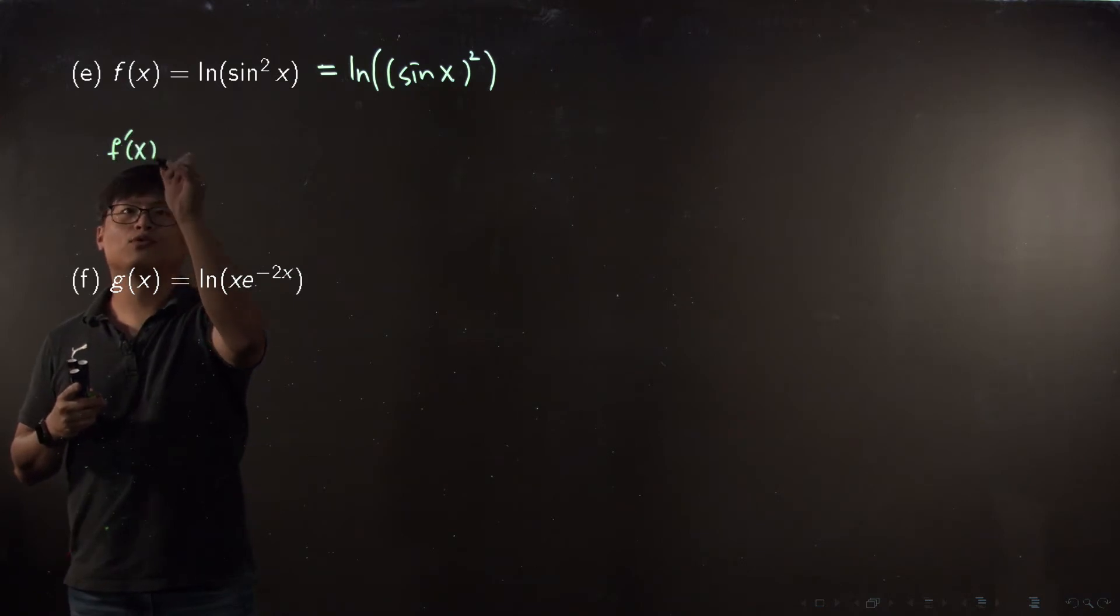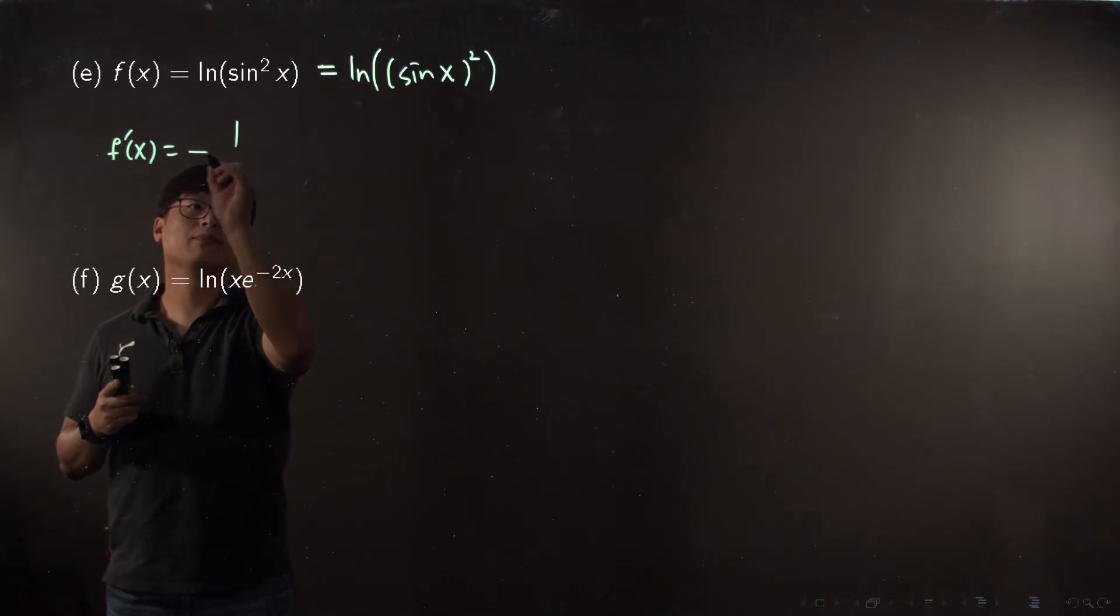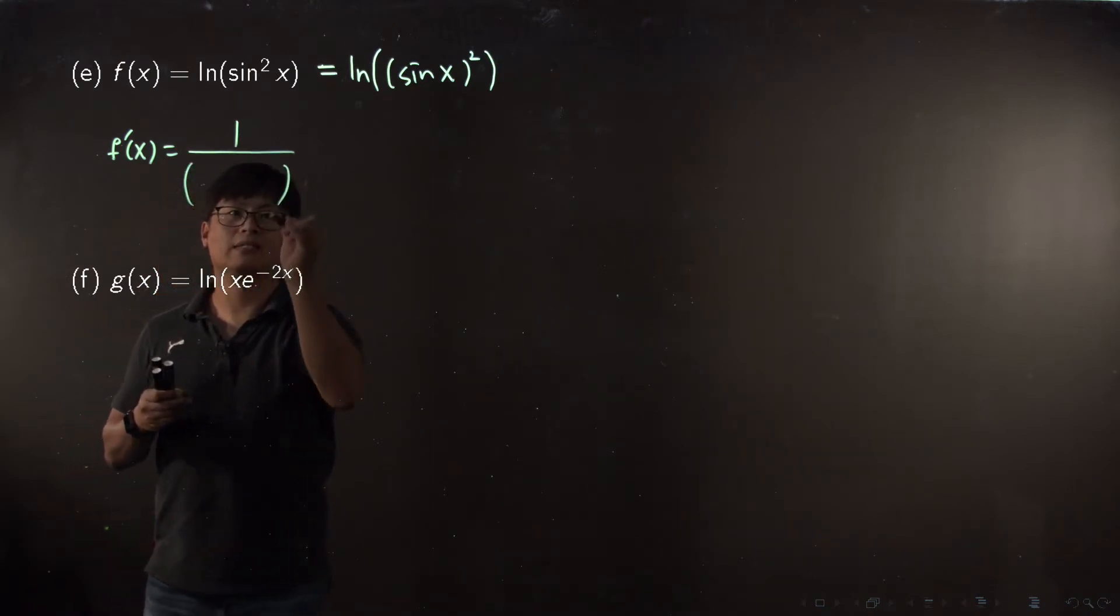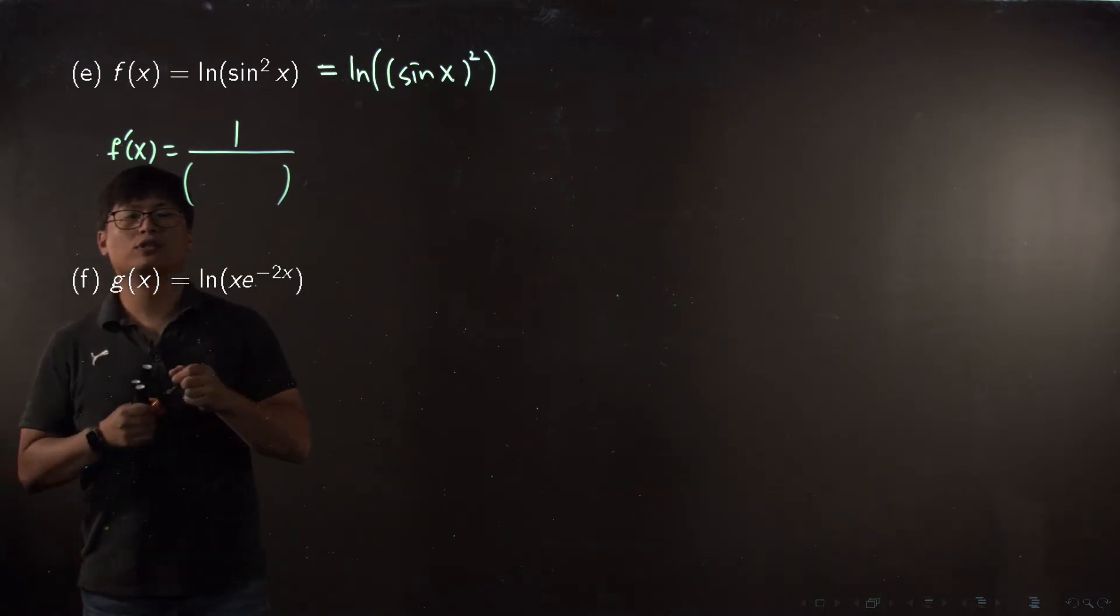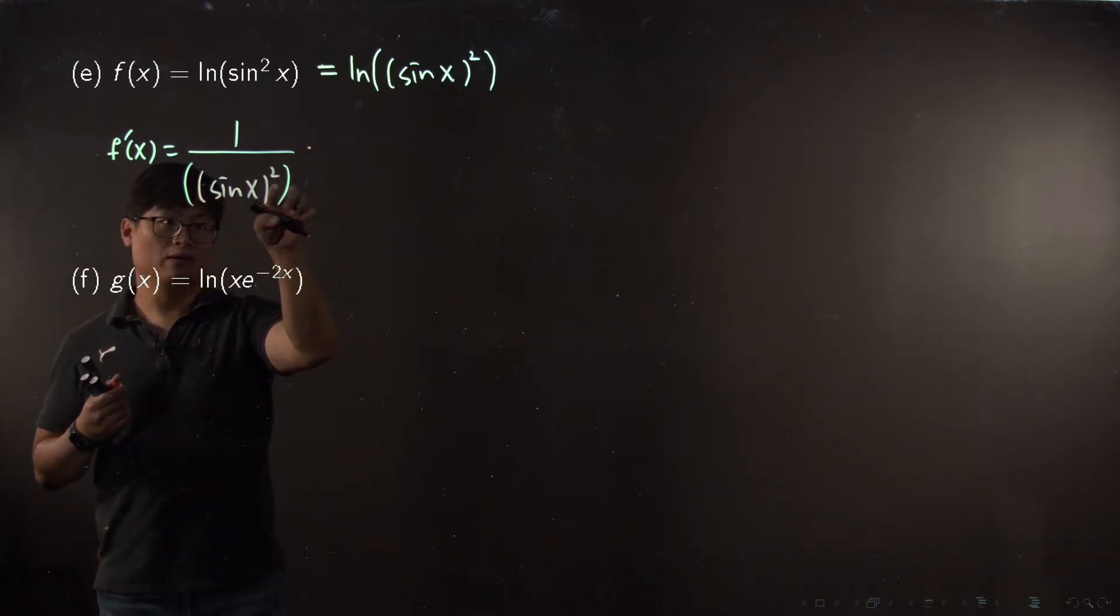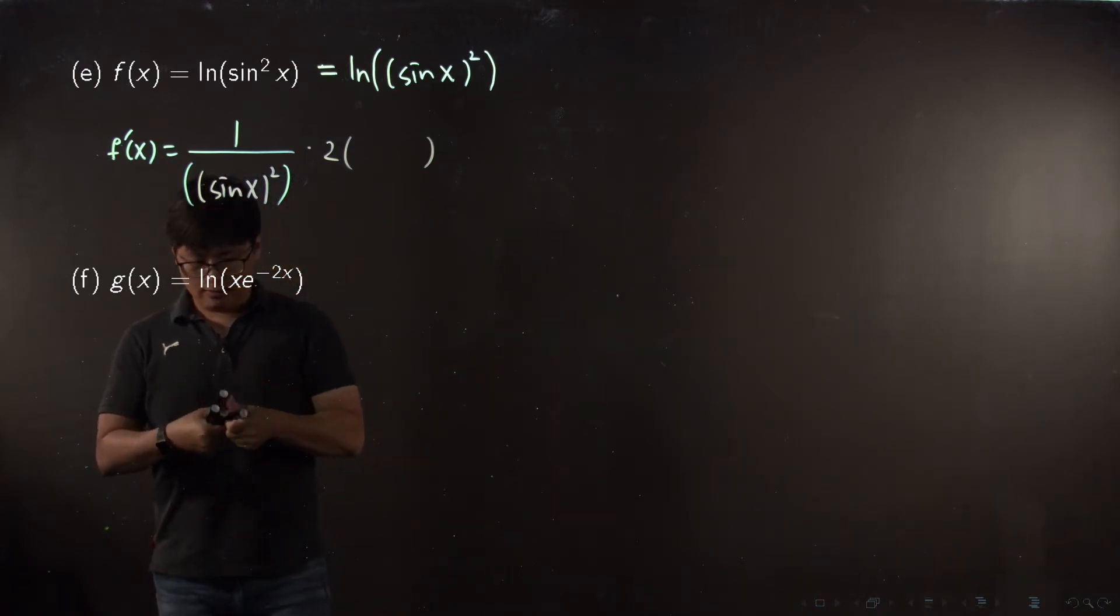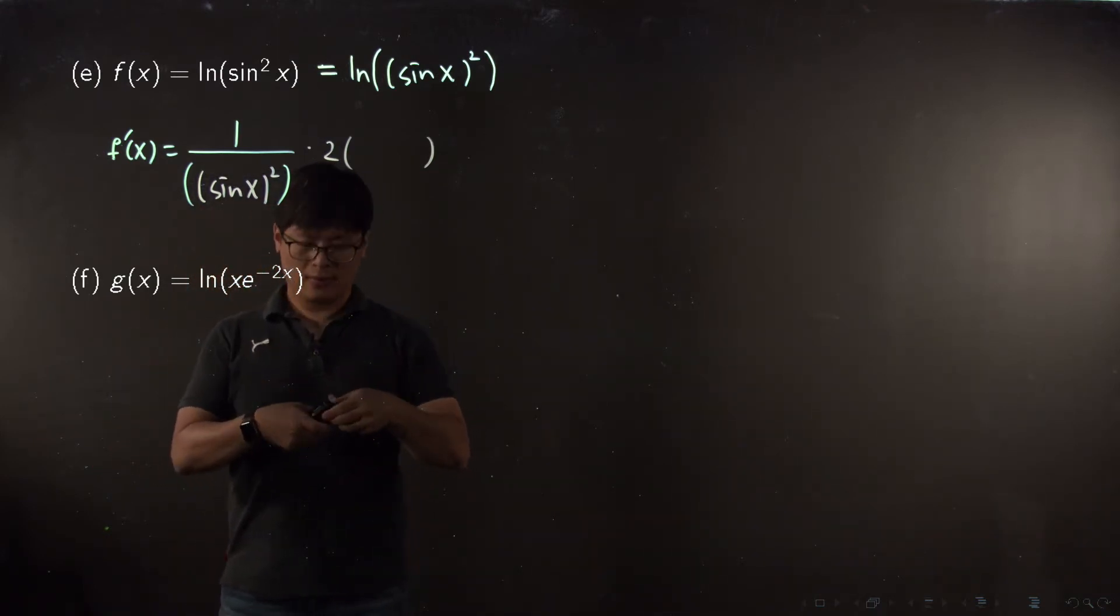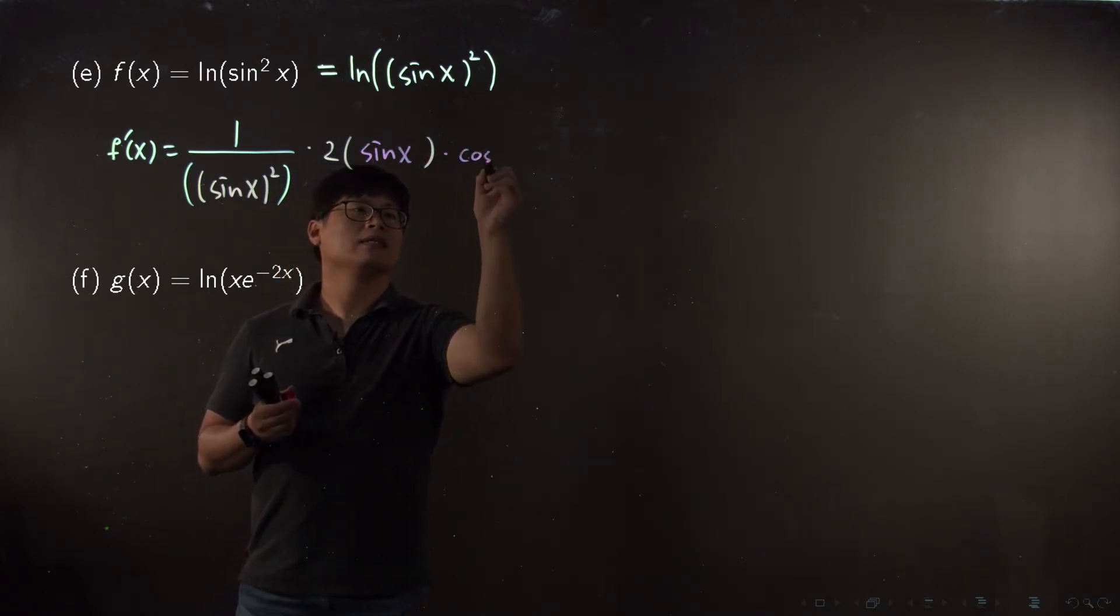f prime of x equals the most outside function, log prime, which is the reciprocal, right? One over the inside, which is sine x squared. Then the second layer, which is the square, brings down 2 to the power of 1. The next layer is sine x.